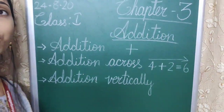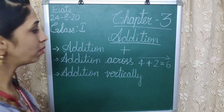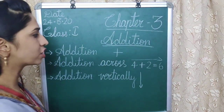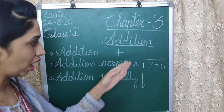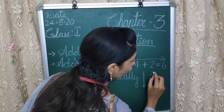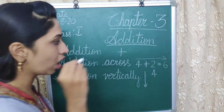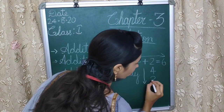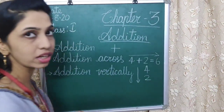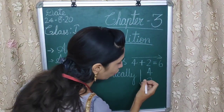In addition vertically, we have to arrange the objects from top to bottom, like a standing line. Let us use the same numbers and arrange them in a vertical way. First, write 4, then write 2 down below the 4. Don't forget to put the plus sign before 2.